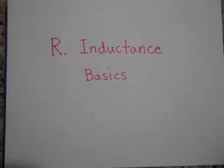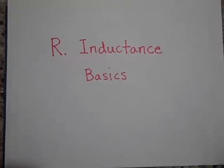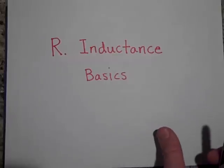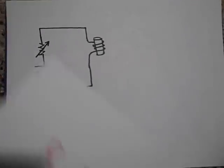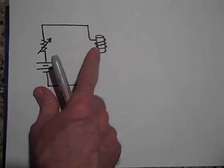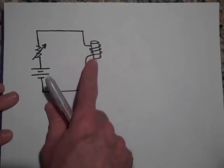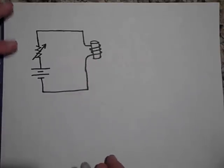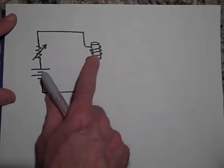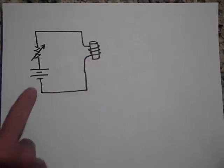Here we are at the last unit in AP Physics called inductance. This will cover the basics of inductance. Inductance is applying Faraday's law and Lenz's law to circuitry. If we put a solenoid into a circuit, we call that solenoid an inductor, and we say that it has some inductance — sometimes it's called an inductance coil.